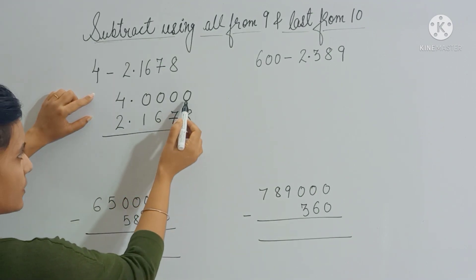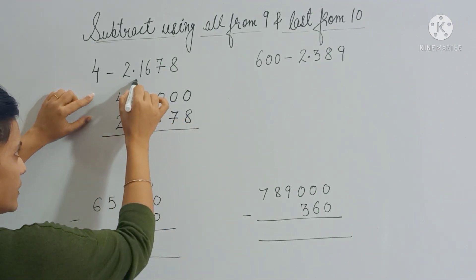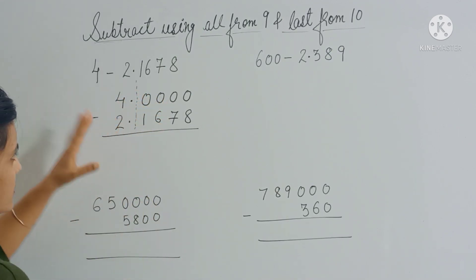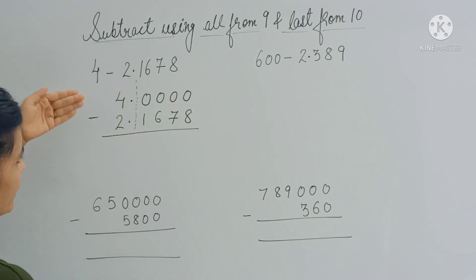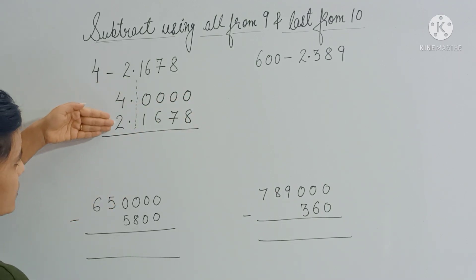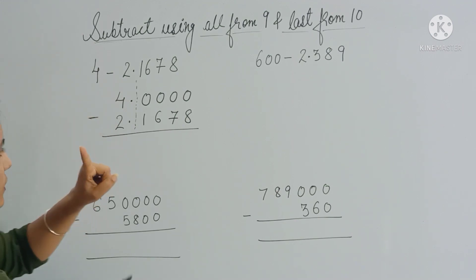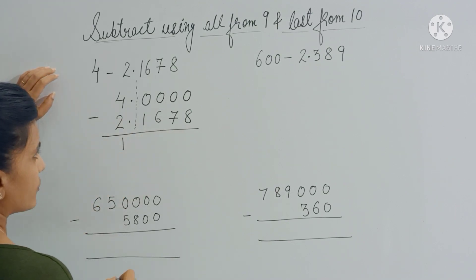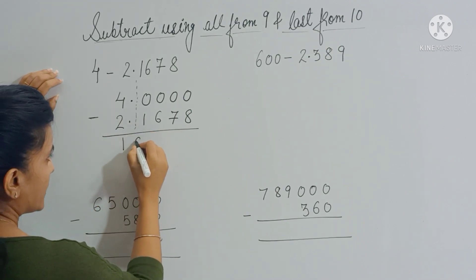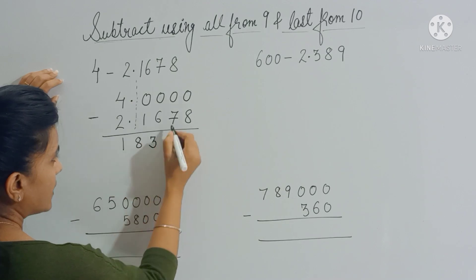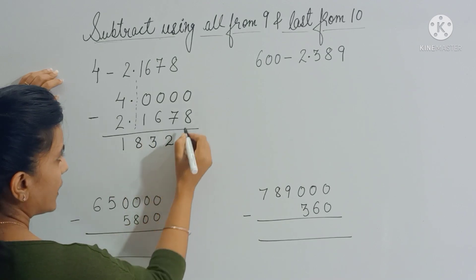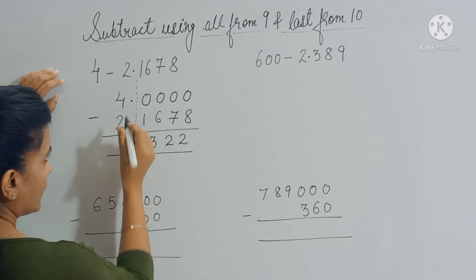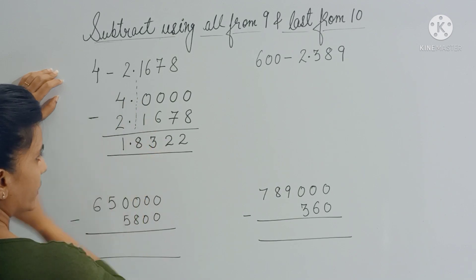Draw a line to separate the zeros, dividing the question into left and right parts. In the left part: 4 minus 2 gives you 2, then reduce by 1 to get 1. On the right side apply 'all from 9, last from 10': 1 plus 8 gives 9, 6 plus 3 gives 9, 7 plus 2 gives 9, and 8 plus 2 gives 10. Place the decimal point under the decimal point — that is your answer.